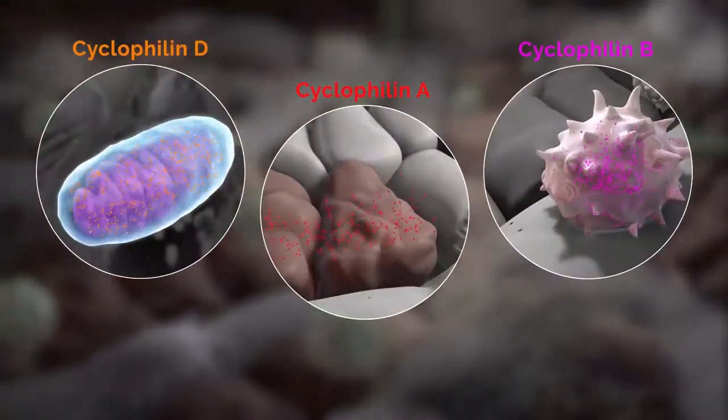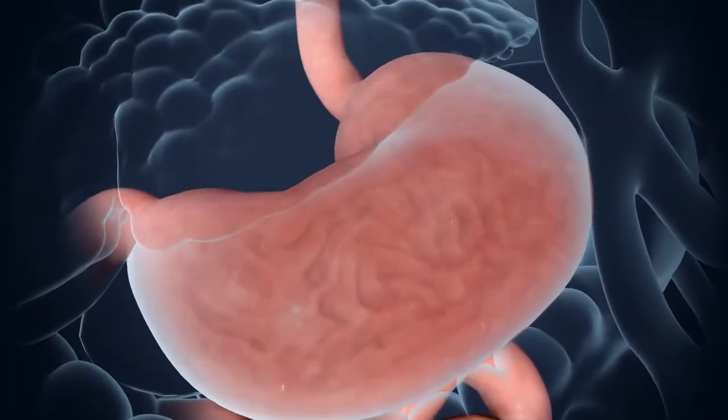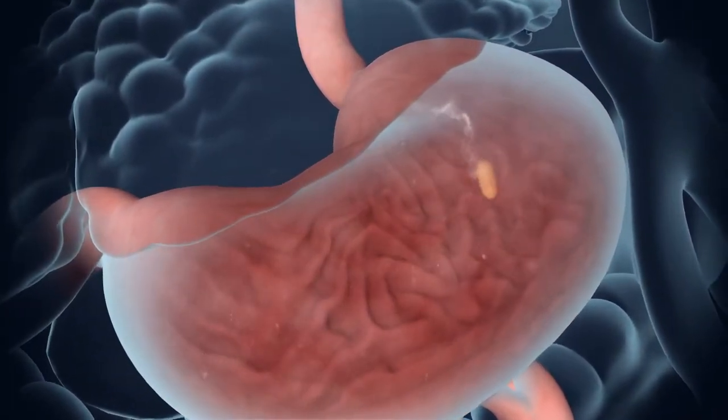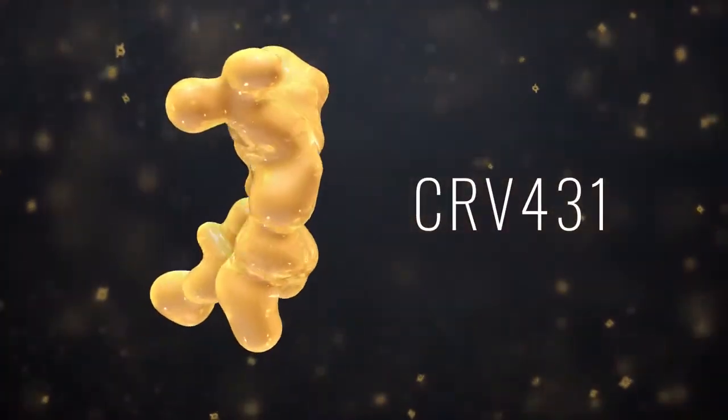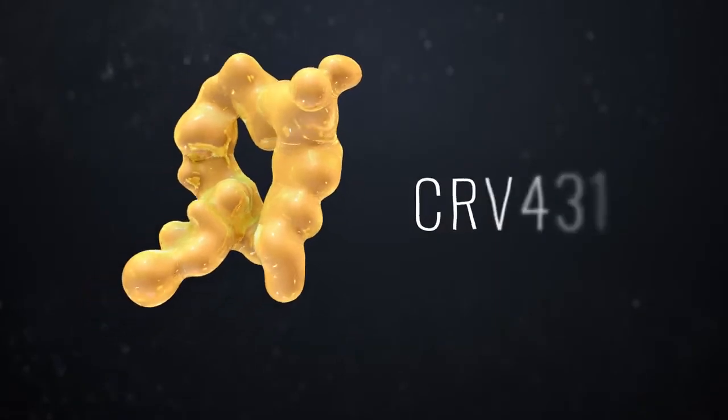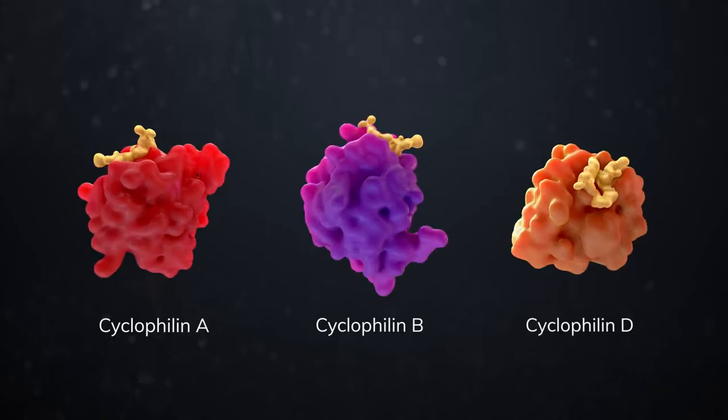Cyclophilins regulate all of these disease processes and can worsen liver damage. CRV431 is an oral drug candidate for NASH and other chronic liver diseases. CRV431 binds to multiple forms of cyclophilin which results in blocking multiple stages of the disease.